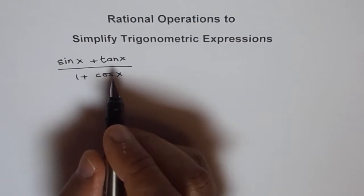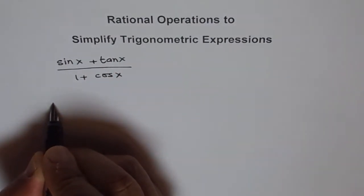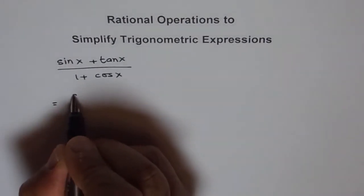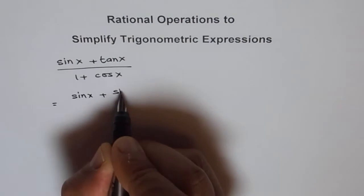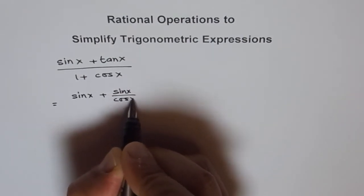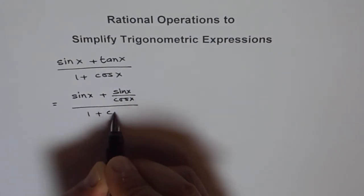You know what tan is. Tan is sin x over cos x, a ratio of sin and cos. So we can write this as sin x plus sin x over cos x, divided by 1 plus cos x.